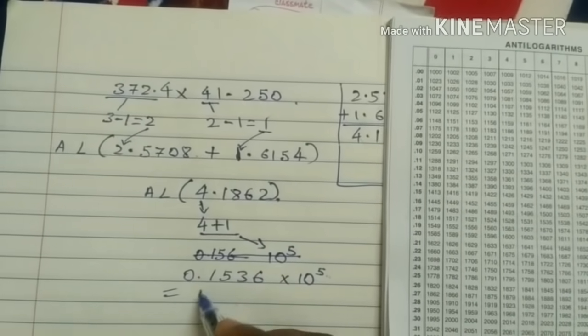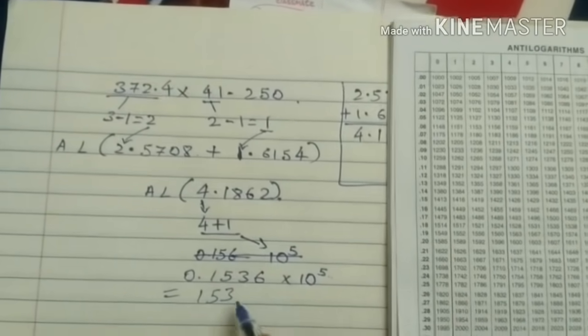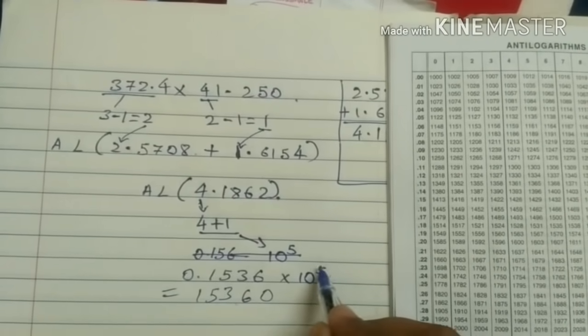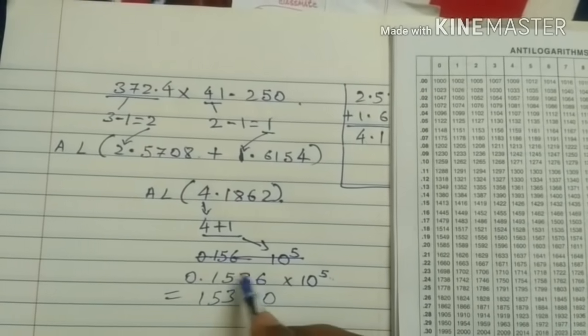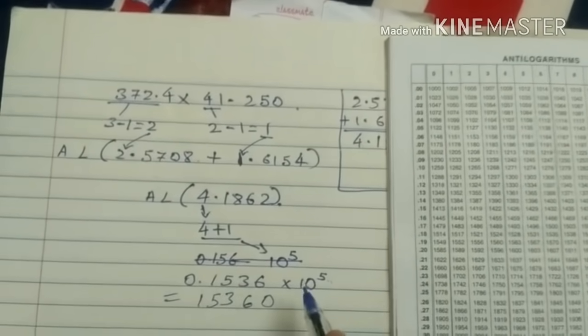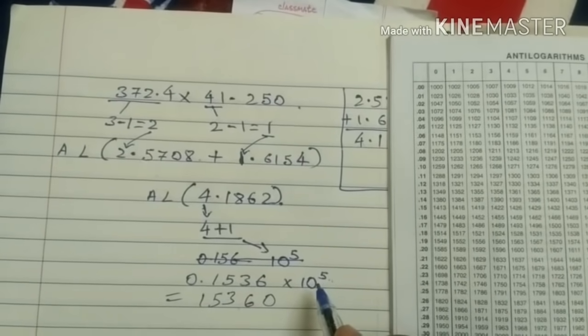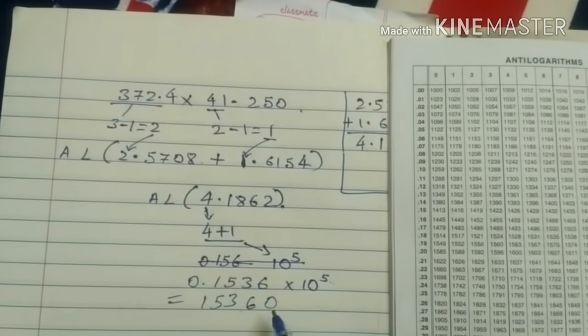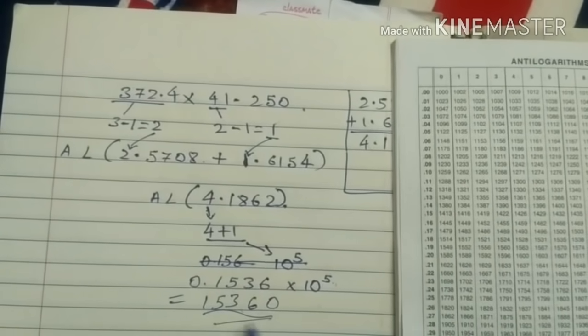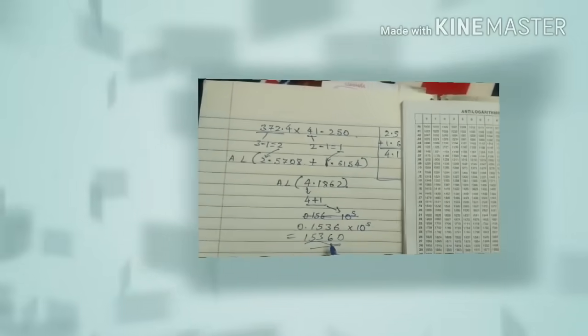1. 5. 3. 6. 0. Because. In. This is 4 digit number. Right guys. So this 4 number. Will get. Before the decimal. And again. The 1 is remaining. Because. Because it is given. 10 raised to 5. So now it become. 1 more 0. 1 more 0. Will come here. So the answer will be. 1. 5. 3. 6. 0.